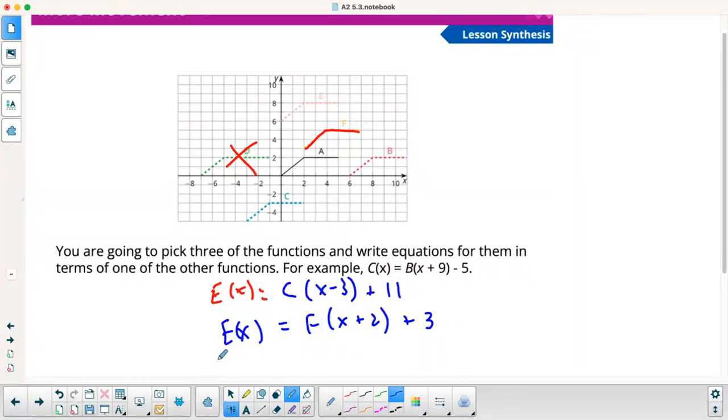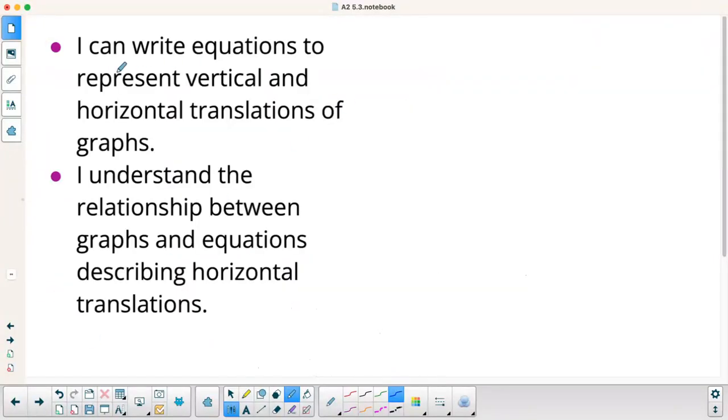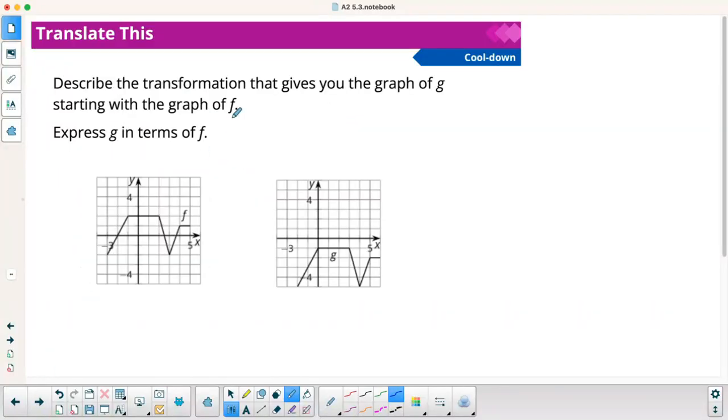And it says to do three. I'm going to do one more. So let's go A of X. And since I already got it at F, I'll do it in terms of F. So it's going to be, I need to go left two down three. So X plus two again to go left two and then down three would be minus three. All right. So our goal is I can write equations to represent vertical and horizontal translations of graphs. And I understand the relationship between graphs and the equations describing horizontal translations.